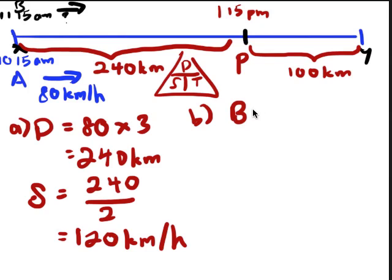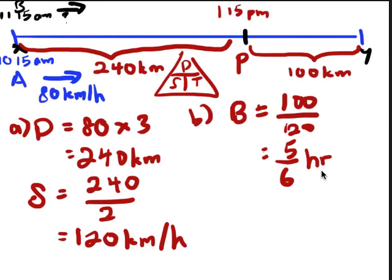So my distance is 100. So for Bobby divided by your time. What's your time? I have speed which is 120. That will give me what? 5 over 6. 5 over 6 of an hour. So what is that? That's 50 minutes. In other words, what time will he reach? He will reach at 1:15 plus 50. So 1:15 plus 50 minutes equals to what? 2:05.